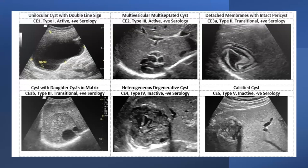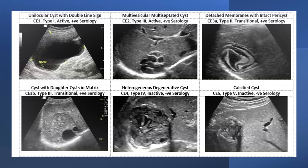This WHO classification shows six ultrasound appearances: unilocular cyst, multivesicular cyst, cyst with ruptured membranes, cyst with matrix, heterogeneous mass, and calcified mass. Based on these, even a clinician who hasn't seen many cases can decide how to manage these patients.